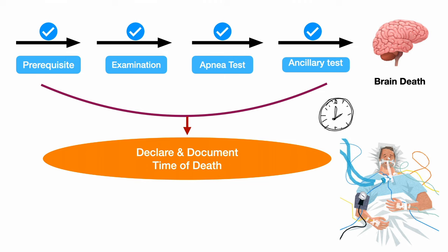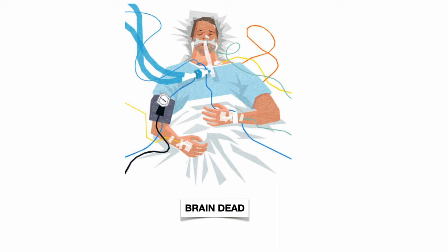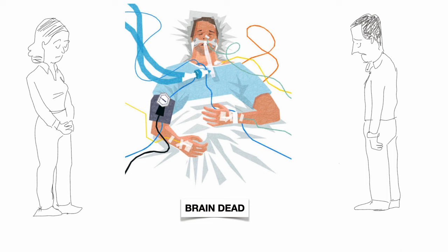Often media uses interchangeable names like coma, vegetative state, brain damage, and brain death, which confuses people — but now you know better. Coma is not brain death and brain death is not coma. Brain death is death. And living organs, if donated, can save 8 other lives. Organ donation saves lives.